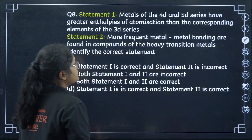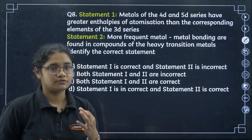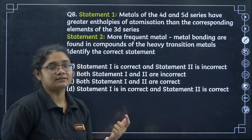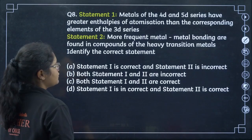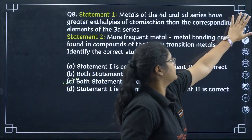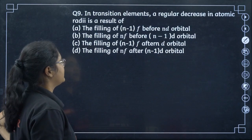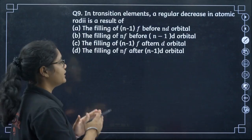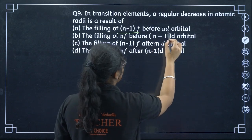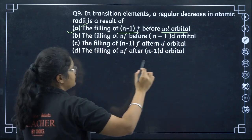Metals of 4D and 5D series have greater enthalpies of atomization than the corresponding 3D elements — that is correct. More frequent metal-metal bonding is found in heavier transition metals — this is also correct. So both statements 1 and 2 are correct, option number C. Next, a regular decrease in atomic radius in transition elements is a result of filling of N-minus-1 F orbitals before ND orbitals, due to lanthanide contraction — option number A.